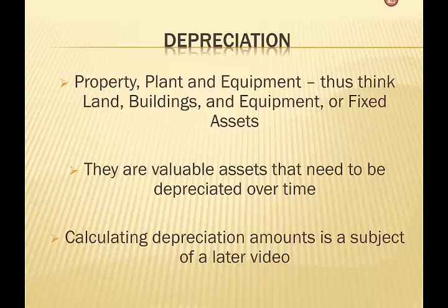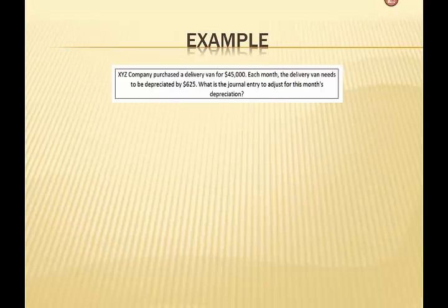So anytime we have property, plant, and equipment — you can think of those as land, or buildings and equipment, or what you will often hear called fixed assets — these are typically very valuable assets that need to be depreciated over time. Note that calculating depreciation amounts is a subject we'll cover in later videos. For our example, XYZ Company has purchased a delivery van for $45,000. Each month, the delivery van needs to be depreciated by $625. So what is the journal entry to adjust for this month's depreciation expense?